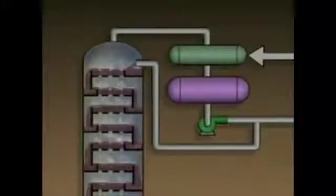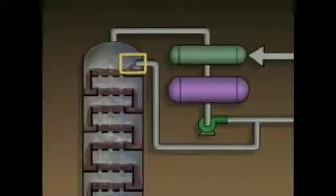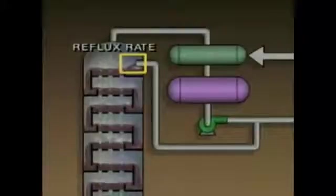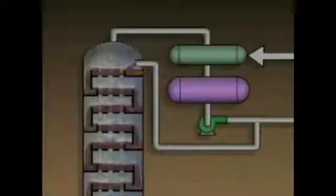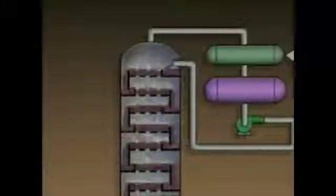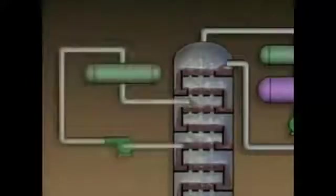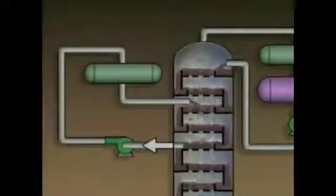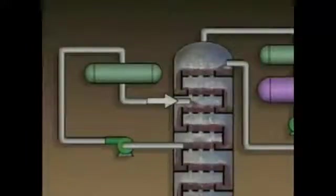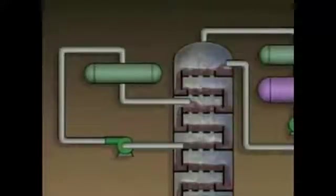The temperature at the top of the tower is controlled by the amount or the temperature of the cool liquid that's pumped back into the tower from the overhead receiver. This is called the reflux rate. Increasing the reflux rate decreases the temperature at the top of the tower. Some distillation systems contain equipment known as pump-arounds. The purpose of a pump-around is to remove hot liquid from the tower and pump it through a cooler. The cooled liquid is then reintroduced at a higher level in the tower. A pump-around helps control the temperature of the internal reflux.